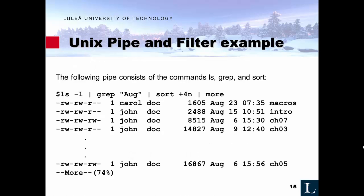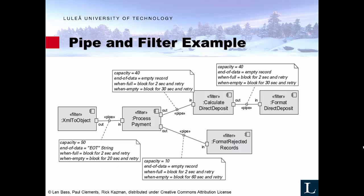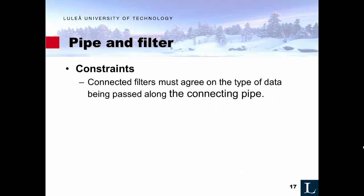For the Unix example: you have 'ls' listing the files, then you pipe it with 'grep aug' so you find all lines containing 'aug' in that list, then you sort them, and then split them into pages if there is a long match. So you only find lines with 'august' in them — in this case displaying 74% of all the matches with more to follow. Basically, the output of one command goes into the input of another, which puts constraints on the interfaces: they need to be fairly generic, agreeing on a common data type passed between connecting pipes.